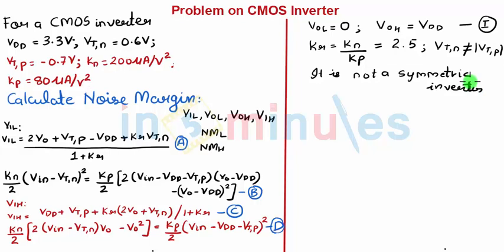Now let's find VIL. The equation is there on the left hand side. Let's substitute everything. Twice into VO, VTP is minus 0.7, minus VDD which is 3.3, plus KR is 2.5, and VTN is 0.6. So 2.5 into 0.6, we already found KR as 2.5 and VTN is 0.6 volts, that is 1.5 upon 1 plus 2.5.